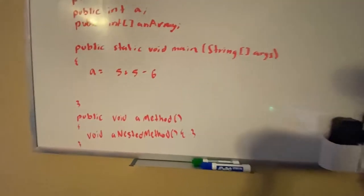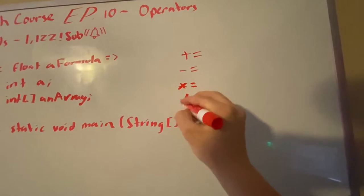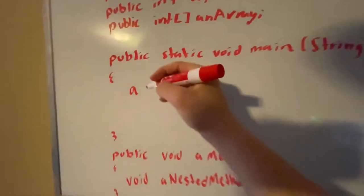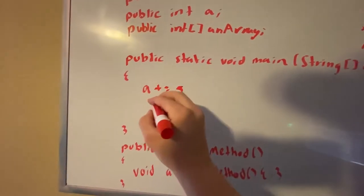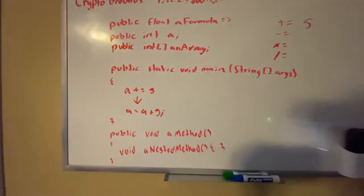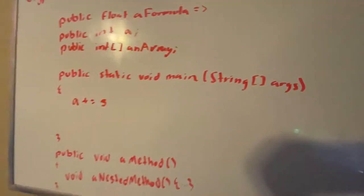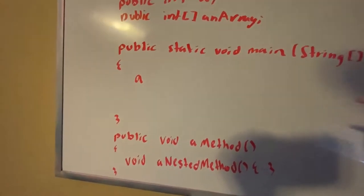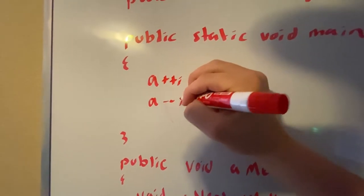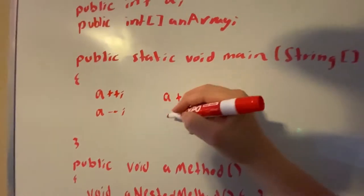Next up we have compound assignment operators: plus-equals, minus-equals, times-equals, and divide-equals. These just add onto the variable you're changing. So if you do plus-equals five, it will add five to that variable — it's the same thing as writing a equals a plus five, just much shorter. We also have plus-plus and minus-minus, which add or subtract one from a variable.